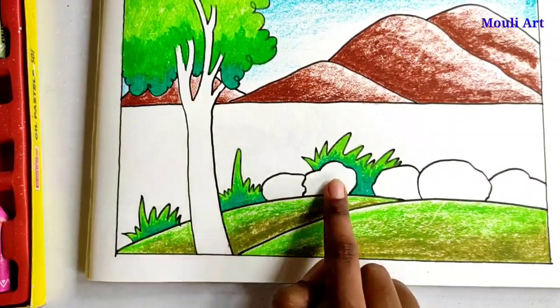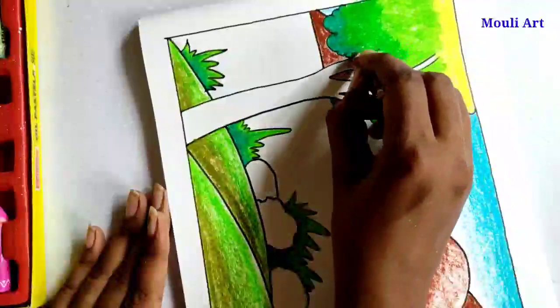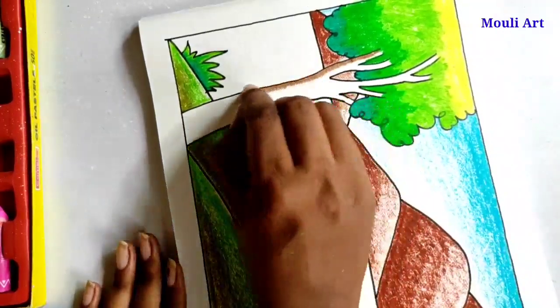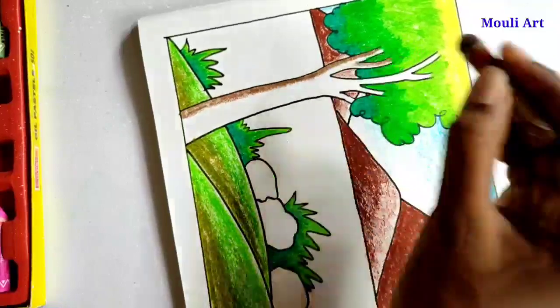Then color the tree and stones. I am using dark brown color for tree and stones. This will be the same, dark to light.